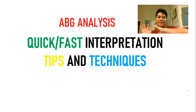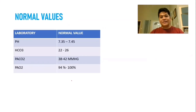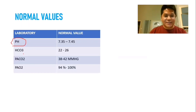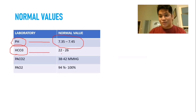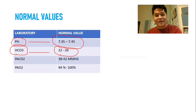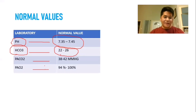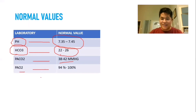Let's start by understanding the normal values. The pH — please remember this by heart — is 7.35 to 7.45. The bicarbs is 22 to 26. The partial pressure of carbon dioxide is 38 to 42, and the partial pressure of oxygen is 94% to 100%. We won't focus too much on the last two when doing ABG analysis.